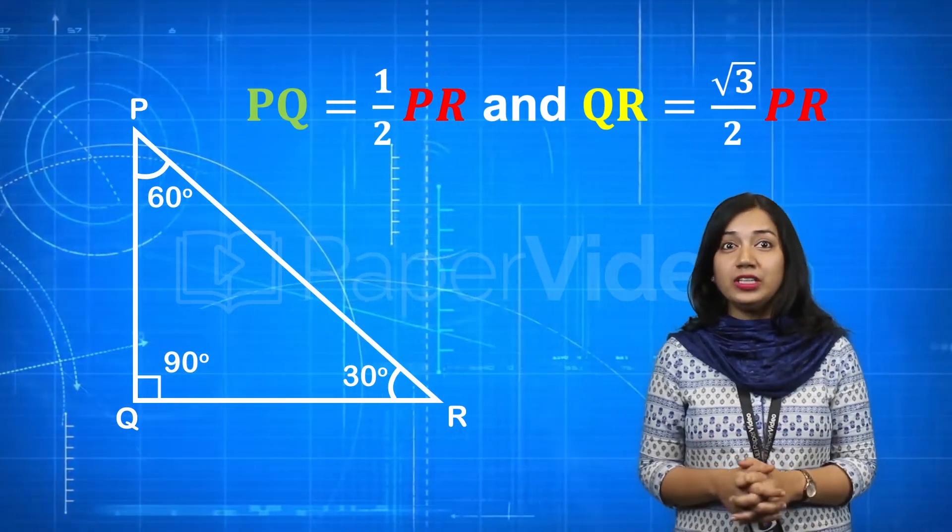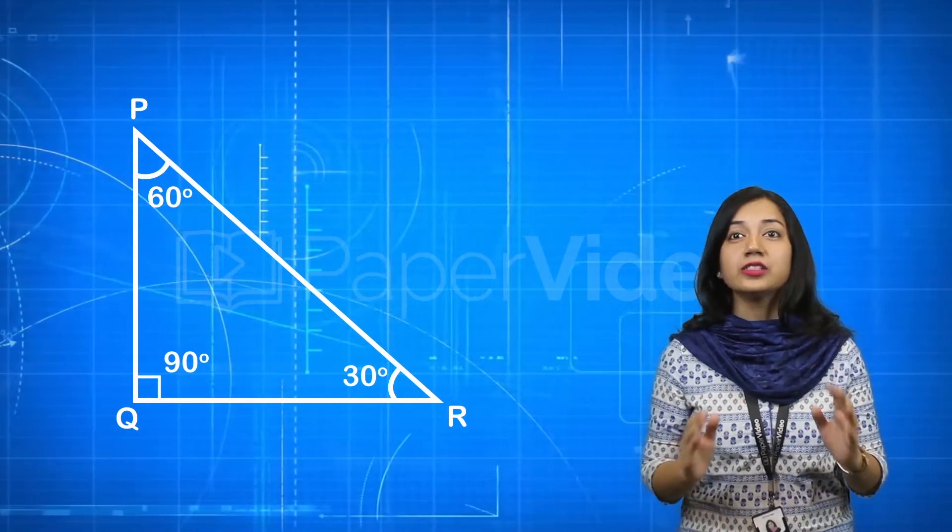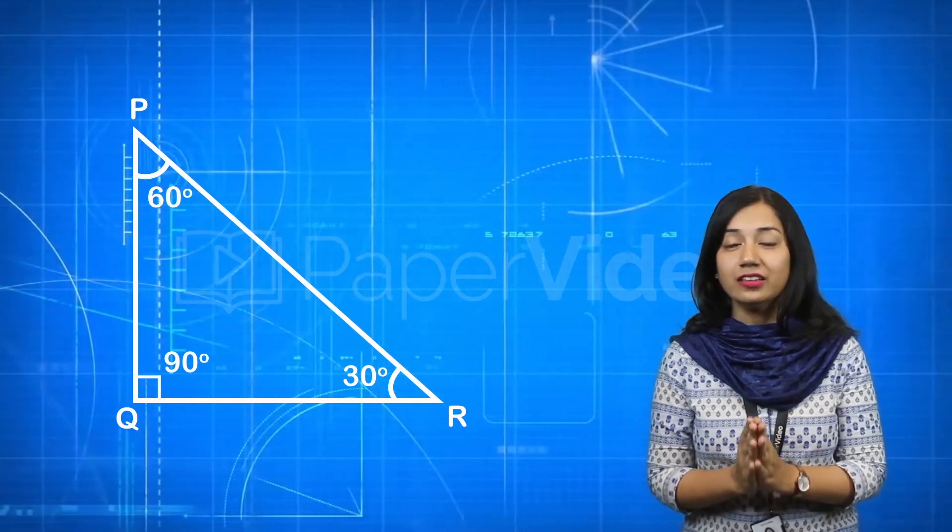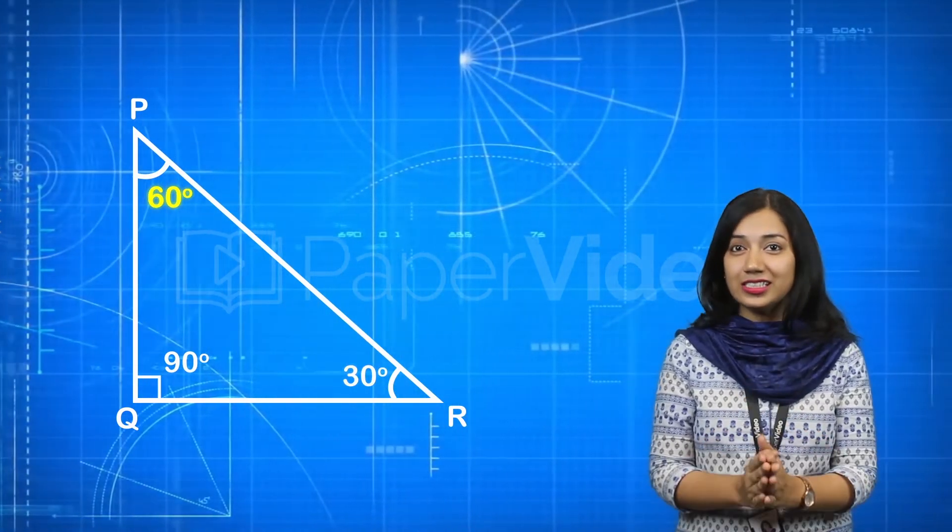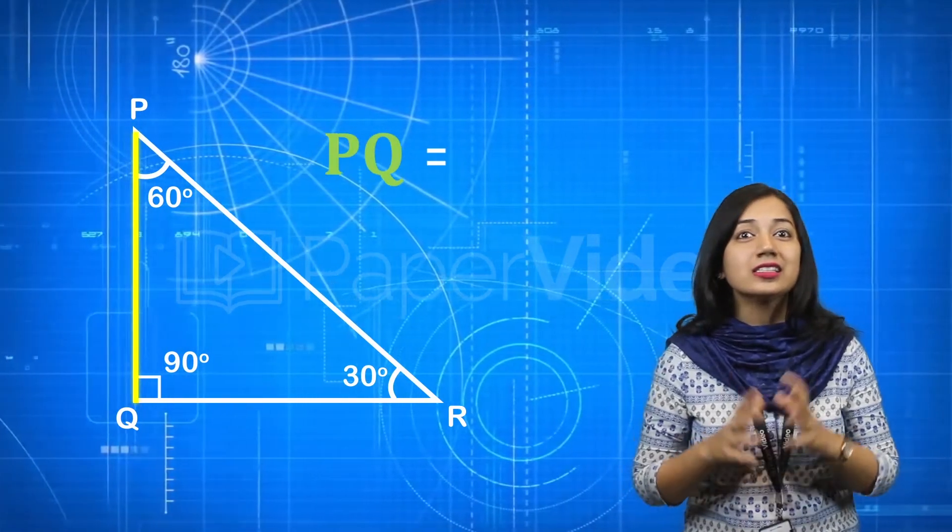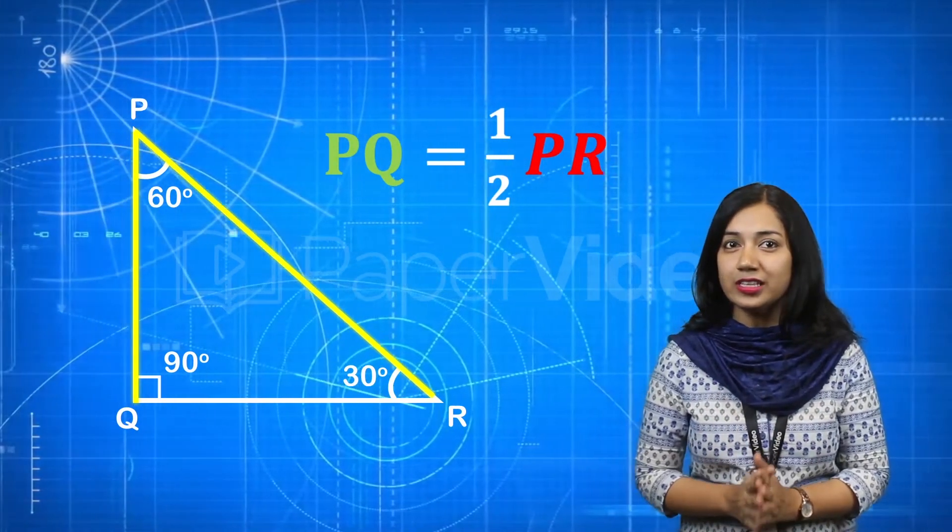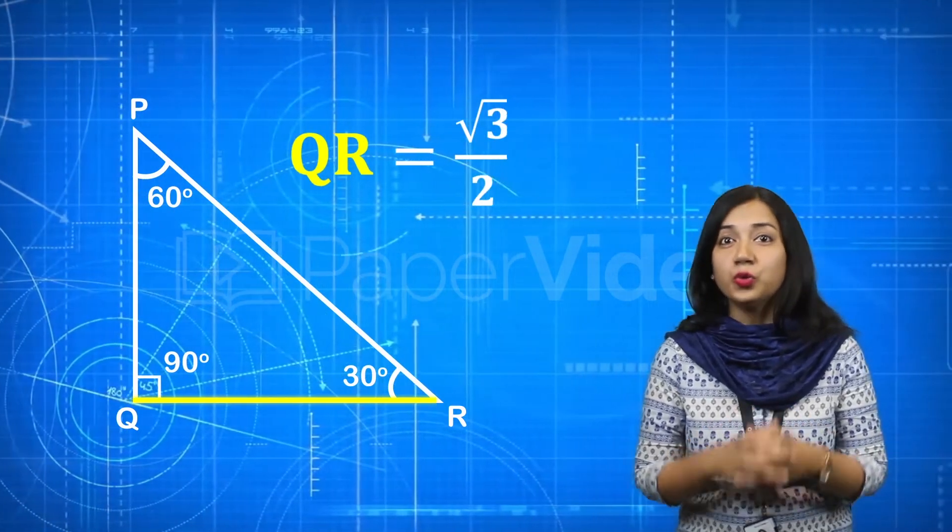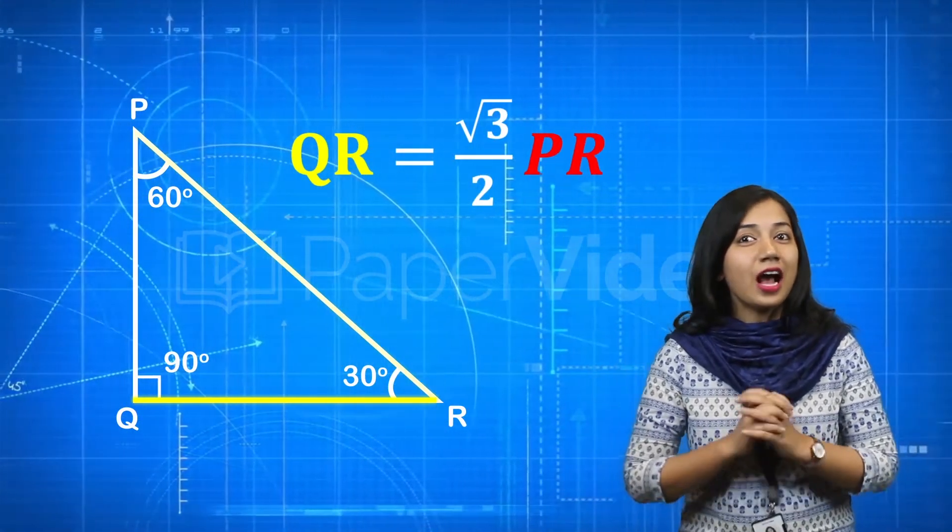Therefore we conclude that if acute angles of a right angle triangle are 30 degree and 60 degree then the side opposite to 30 degree is half of the hypotenuse and the side opposite to 60 degree angle is root 3 by 2 times the hypotenuse.